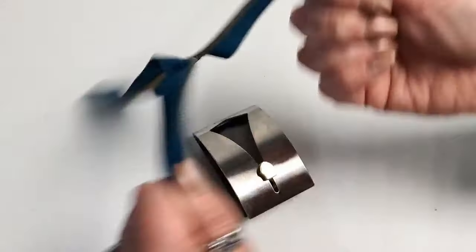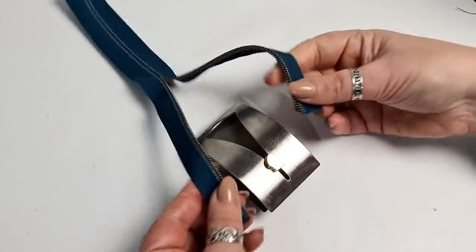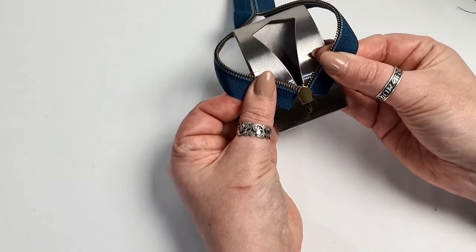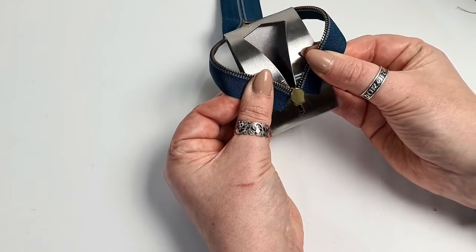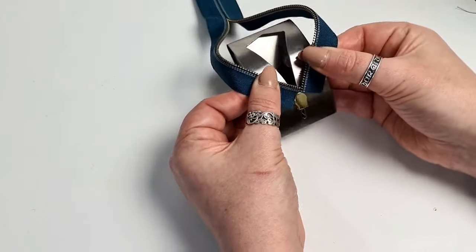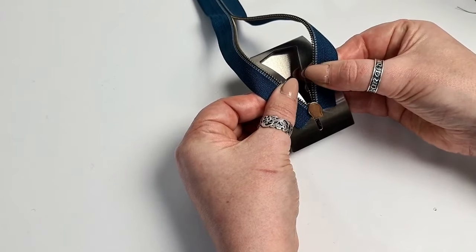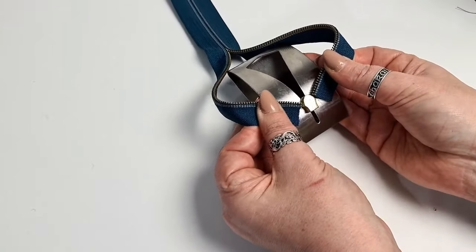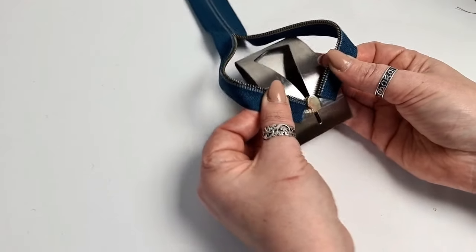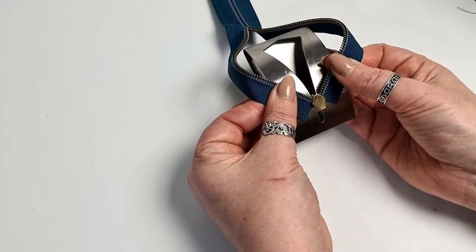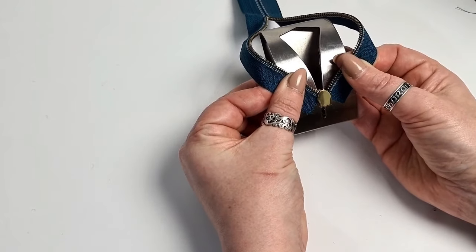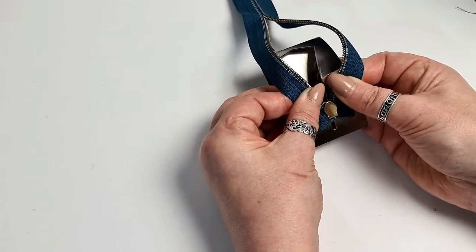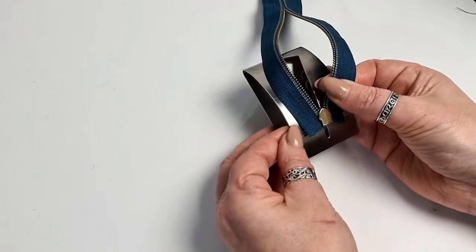So then what we're going to do is we're going to separate the zip, and the zip wants to be fed in at around about a 60 degree angle. If you come in too straight they won't meet very well, if you come in at too much of an angle it just won't work. You want around about a 60 degree angle and we're just literally going to feed in each side until we're feeling them meet.